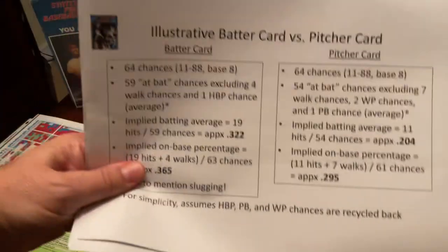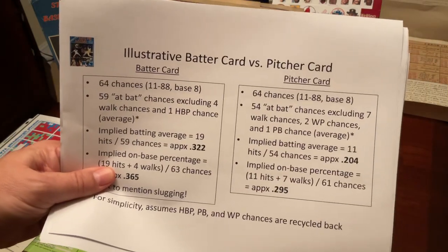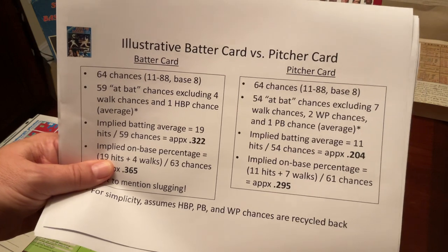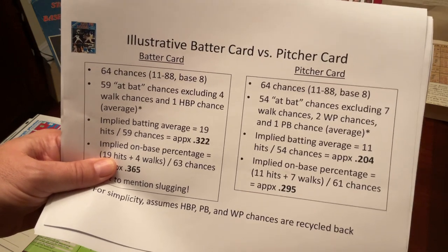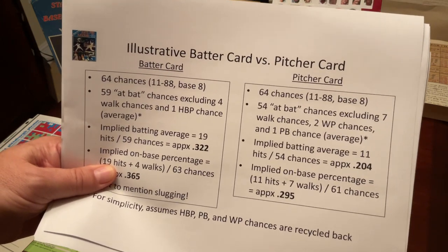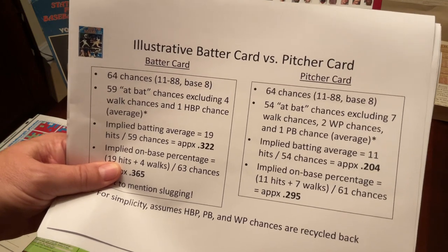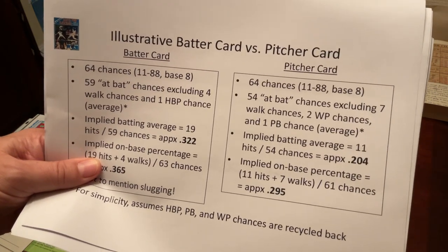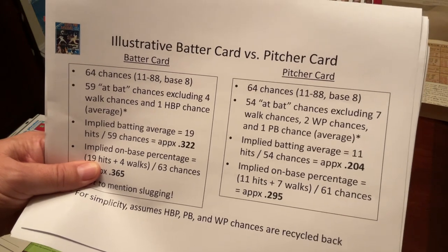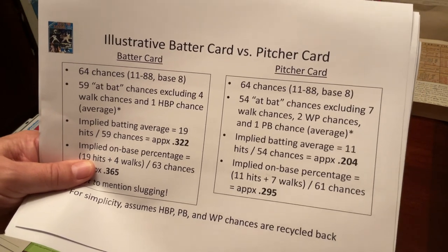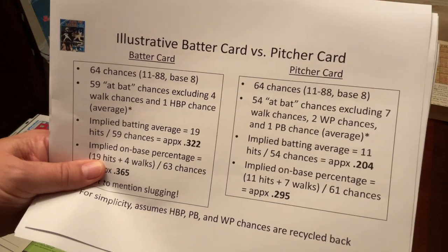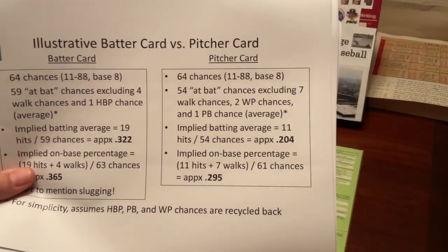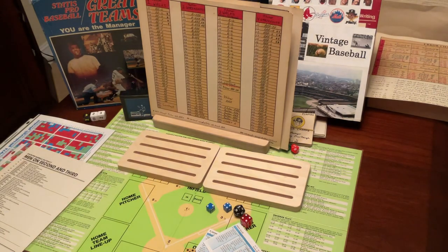I did a little math to see the impact of hitting the average batter card versus the average pitcher card. If you hit the batter card all the time, the person would hit over 300. If you hit the pitcher card all the time, the batter would probably hit around 200 and not have any extra-base hits. So that illustrates the significance of the PB rating system.